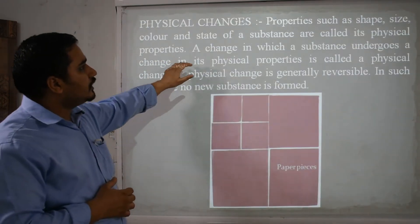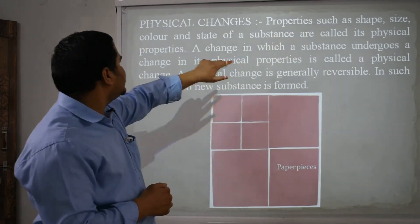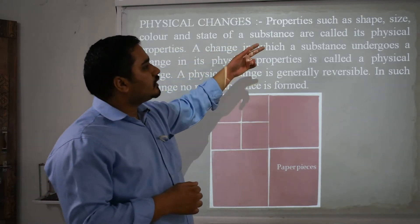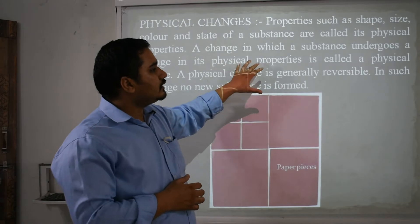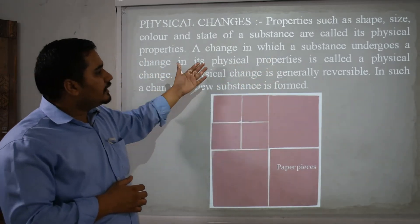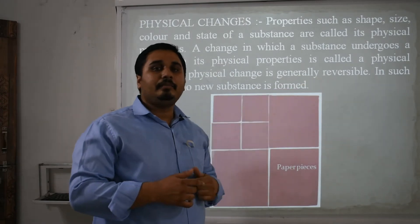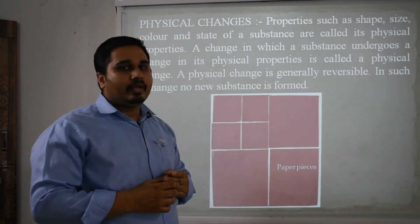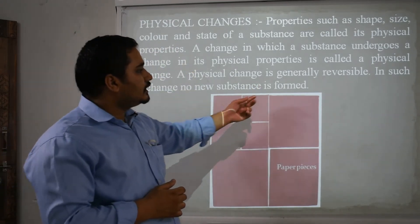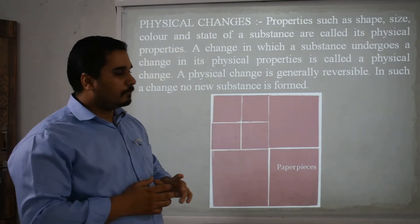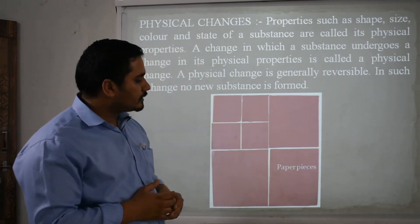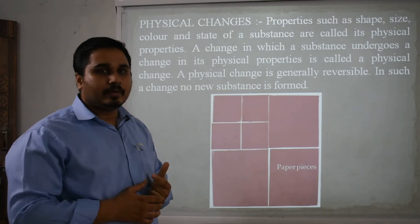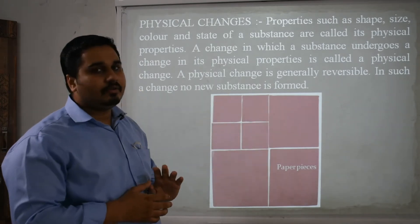Let's begin with physical change. A change in which a substance undergoes a change in its physical properties is called a physical change. A physical change is generally reversible, whereas a chemical change is irreversible. In such a change, no new substance is formed. Two things are very important for physical change: it is reversible and no new substance is formed. For example, a full-size paper which is cut into a smaller size is still represented in its original condition — that is paper. No new substance is formed; only shape and size are changed.